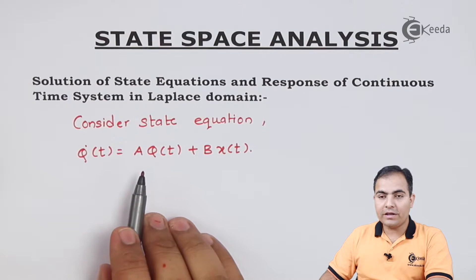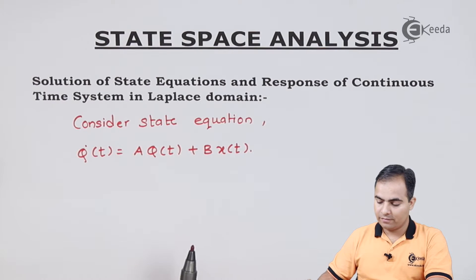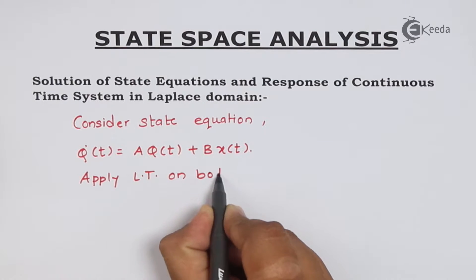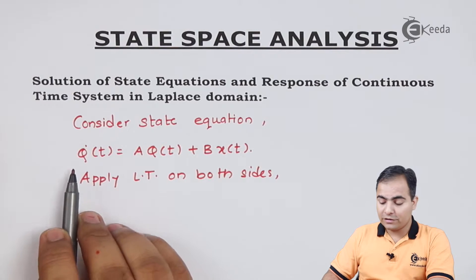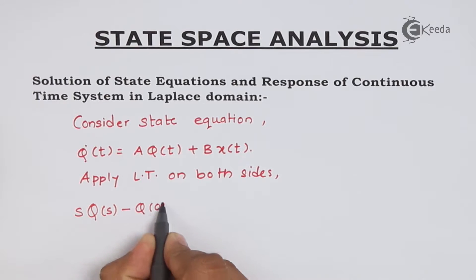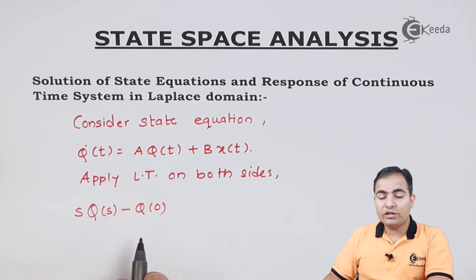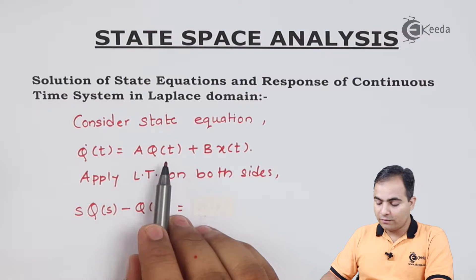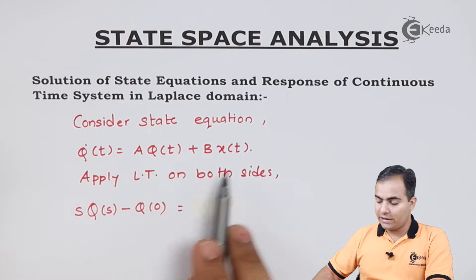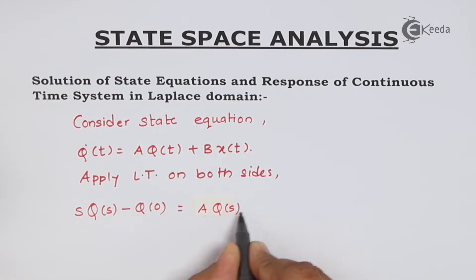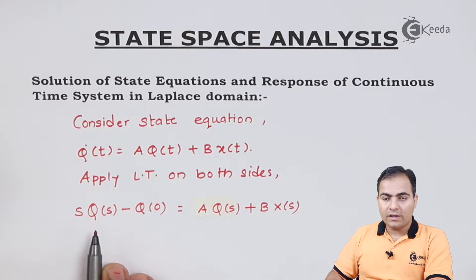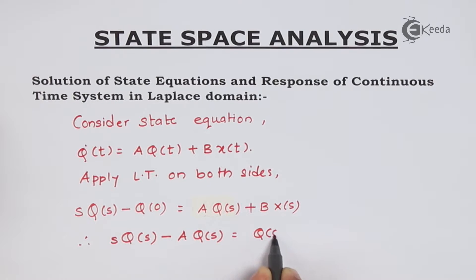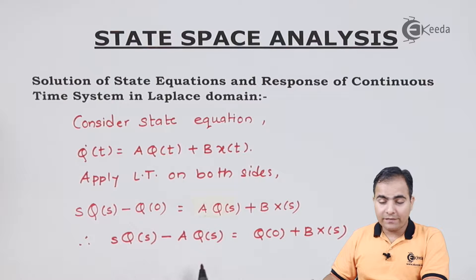My state equation is q-dot of t equals A times q(t) plus B times x(t). Now I will apply the Laplace transform on both sides. The Laplace transform of the first-order differentiation of q(t) is s·Q(s) minus q₀, where q₀ is my initial condition vector. On the right-hand side, A and B are constants, so they stay outside. The Laplace transform of q(t) is Q(s) and of x(t) is X(s). I'll shift Q(s) to the left-hand side and q₀ to the right-hand side.